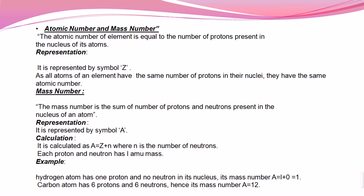We all know that an atom has a positive center called the nucleus, and surrounding it there are electrons. In a bigger atom the number of electrons is greater, and in a smaller atom there is a smaller number of electrons, as well as neutrons in the nucleus that contribute to its mass. When talking about atomic mass, we consider the number of protons as well as the neutrons present in the nucleus.